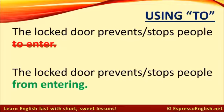Another mistake students make with 'to' is after the words 'prevent' or 'stop'. Don't say: the locked door prevents or stops people to enter. The correct structure is: the locked door prevents or stops people from entering. After 'prevent' or 'stop', we have a person or object, then 'from' plus the -ing form of the verb.